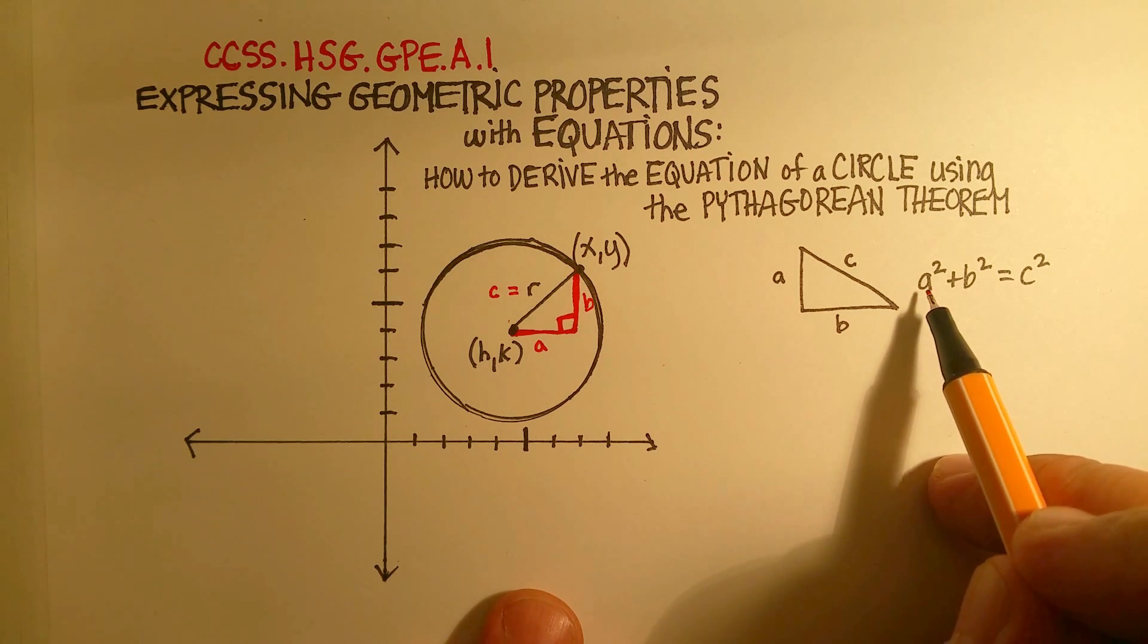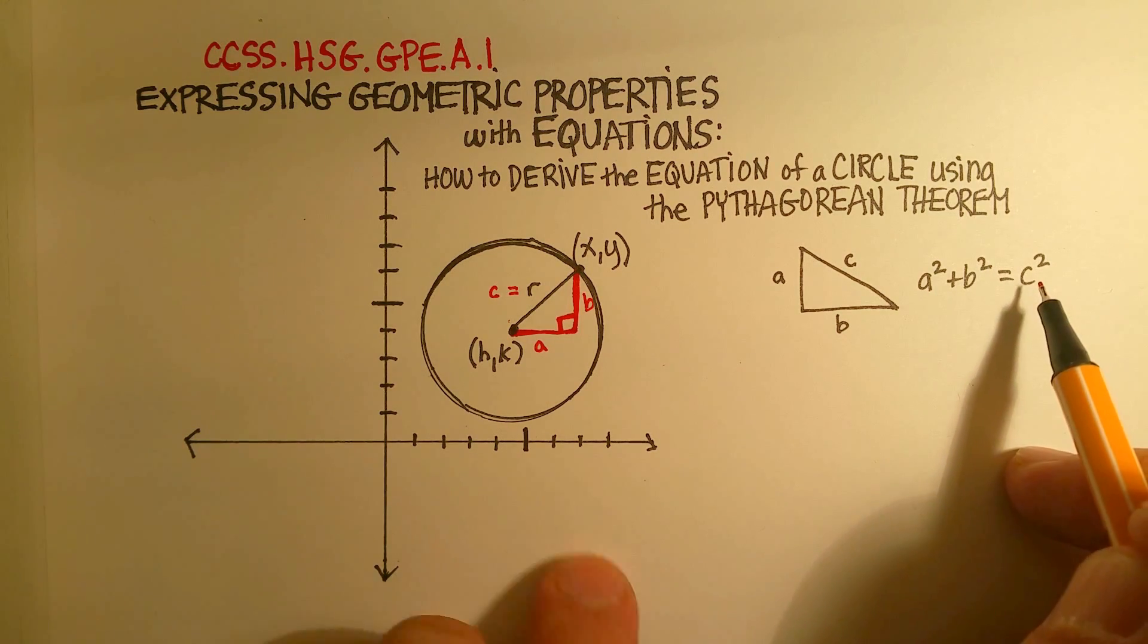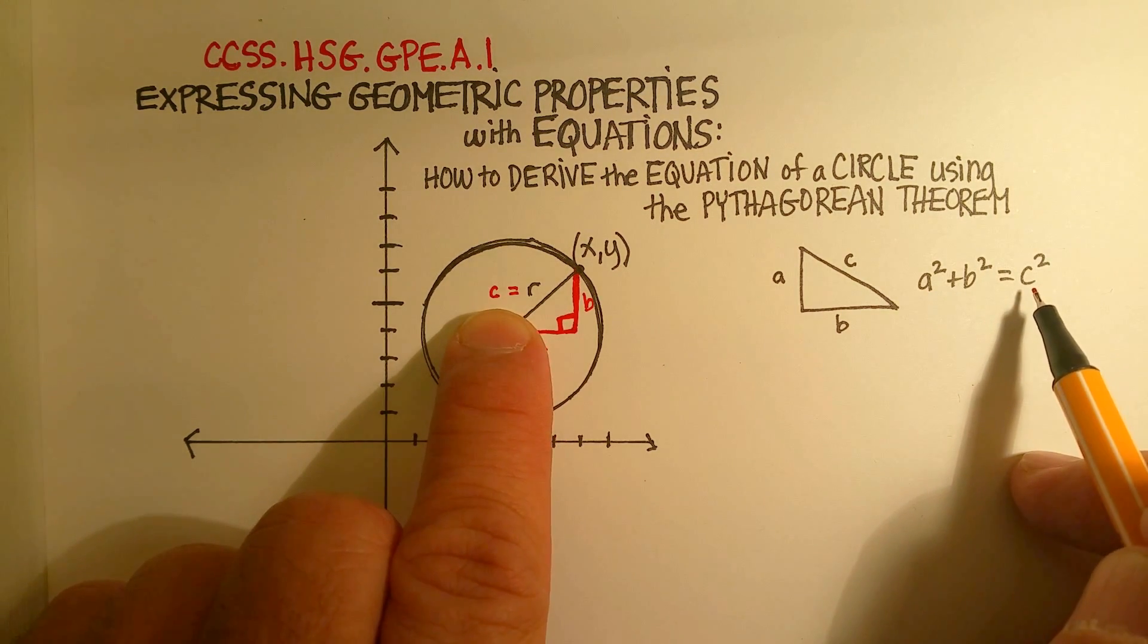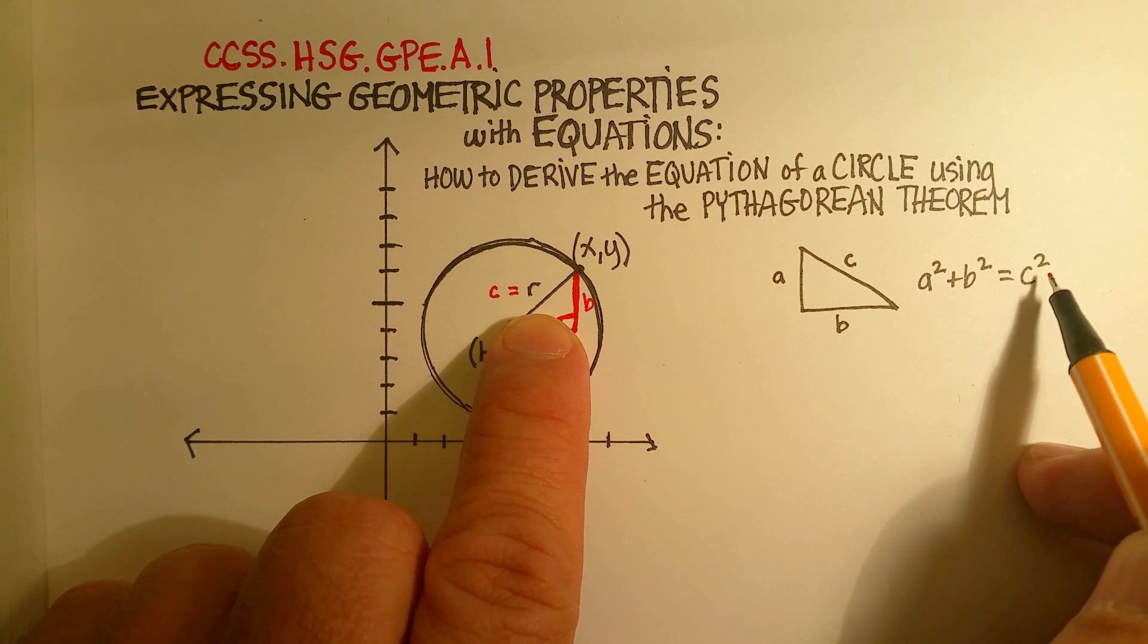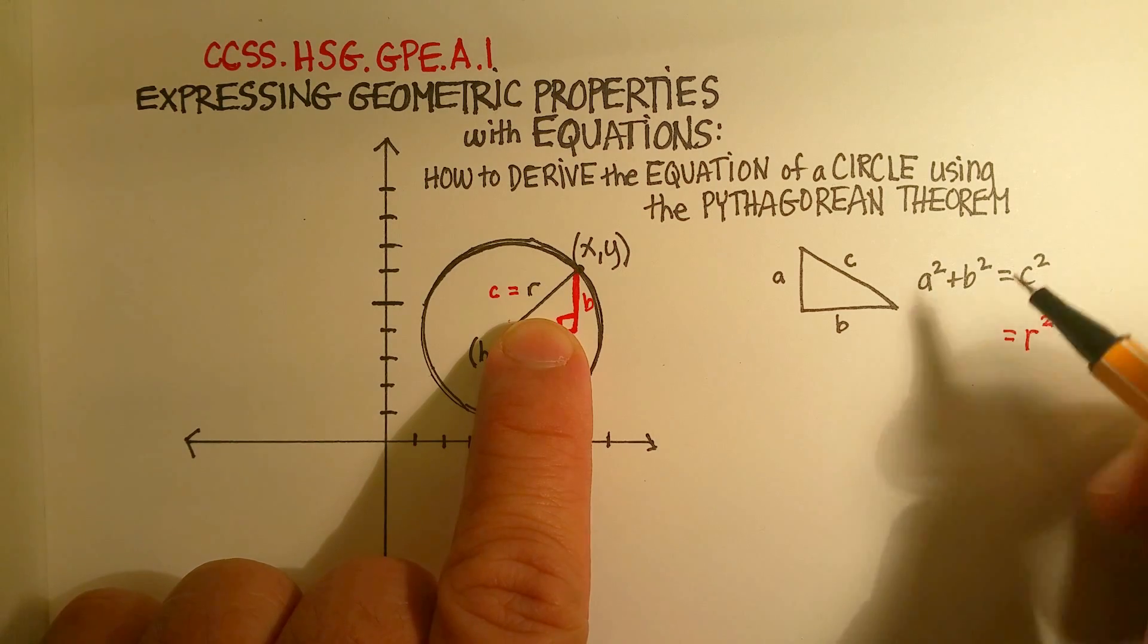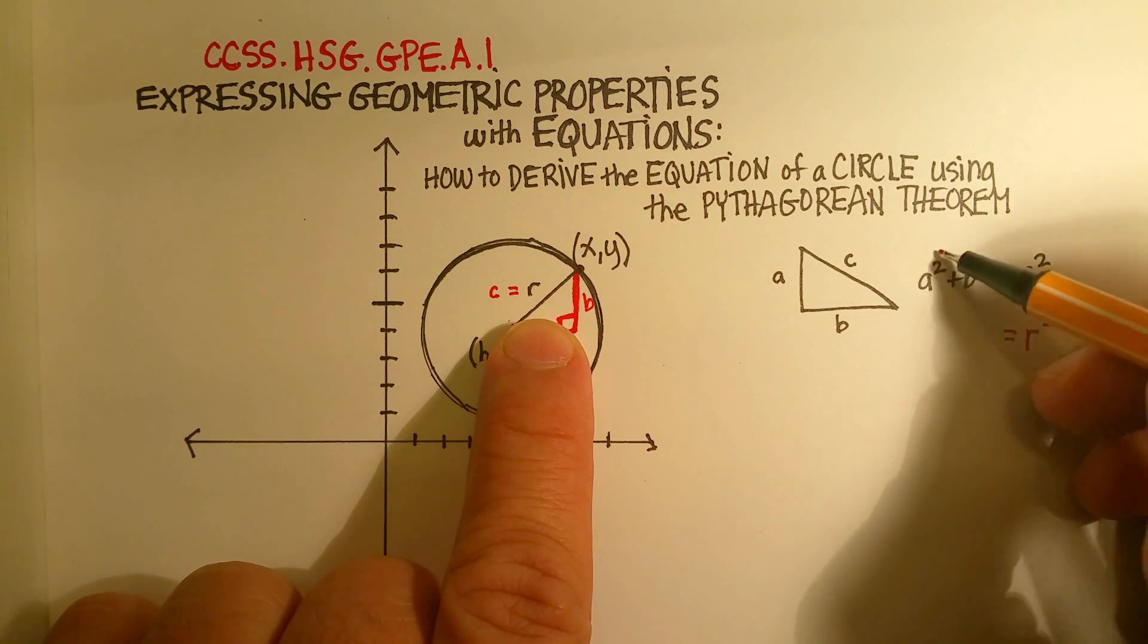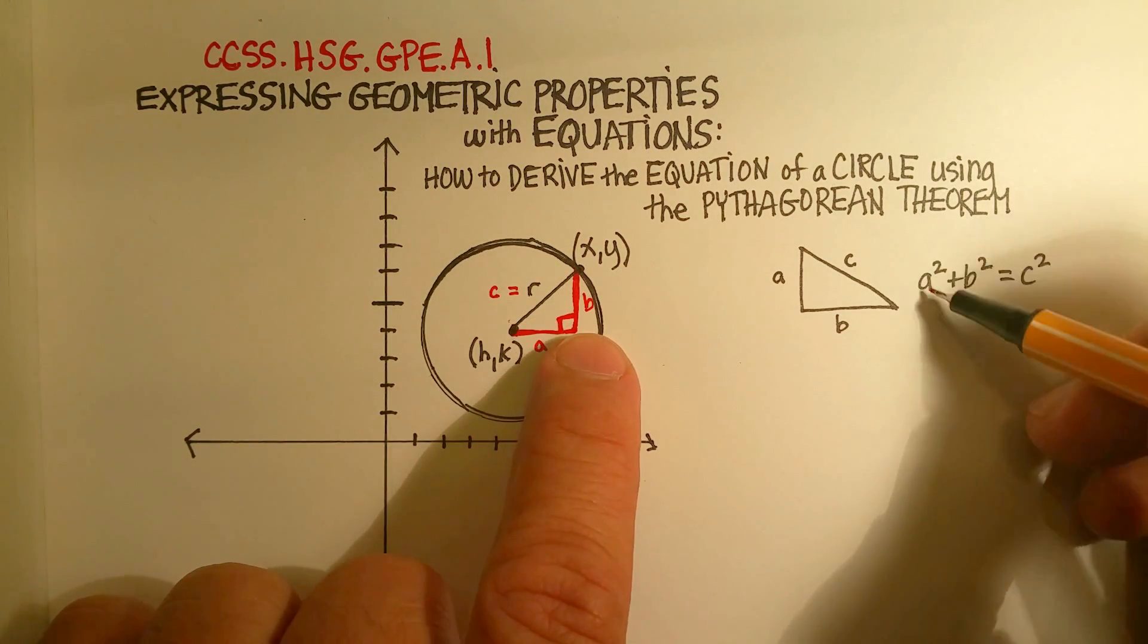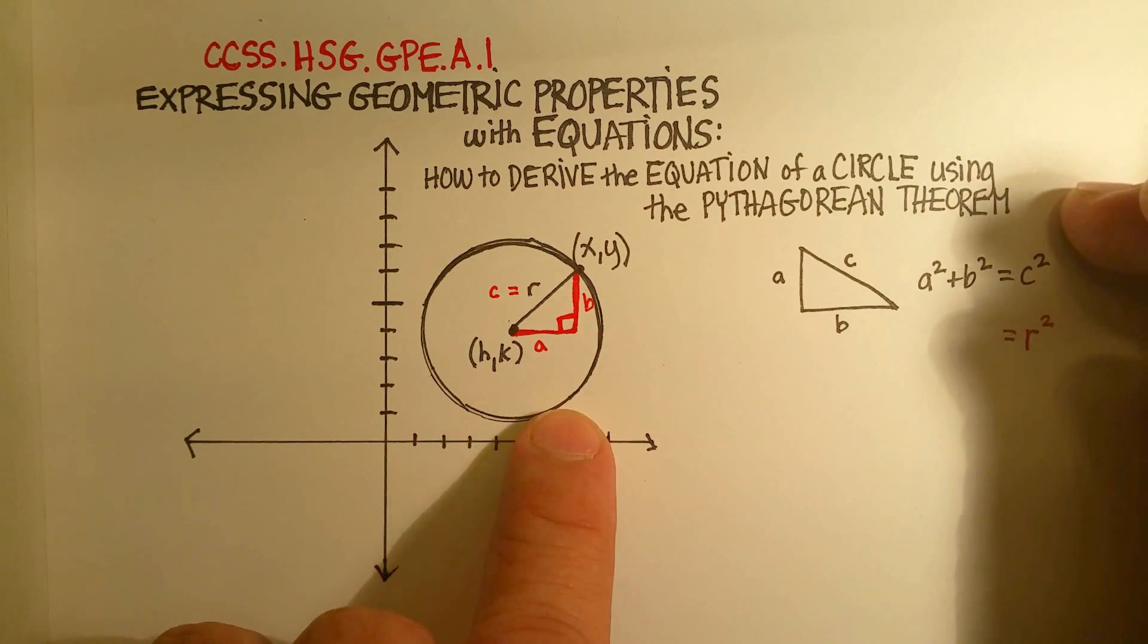In our Pythagorean Theorem, a² + b² = c², except we replace c with r. So we have a² + b² = r². Now we have to find a value for a and a value for b.